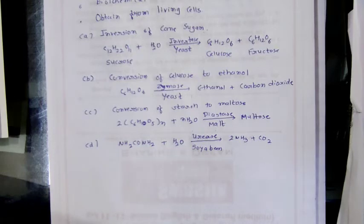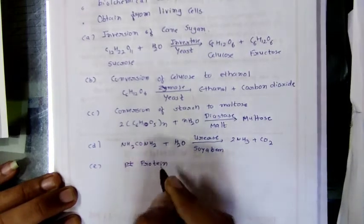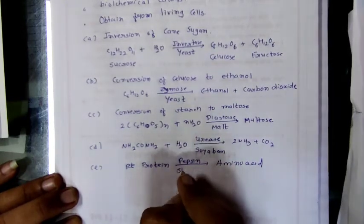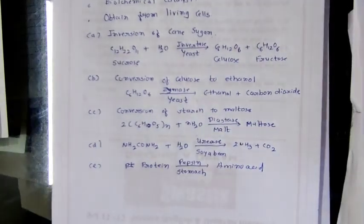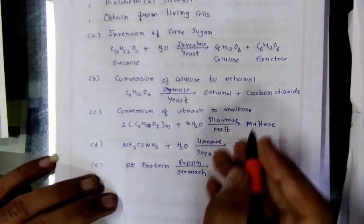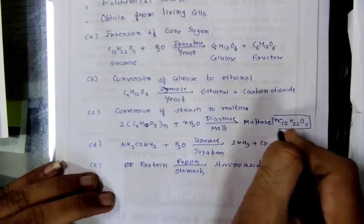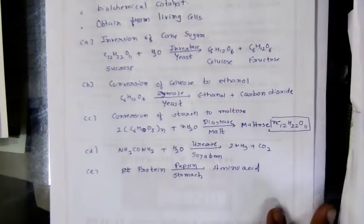In the stomach, the pepsin enzyme converts protein into amino acids. So protein, in the presence of pepsin enzyme (source: stomach), is converted into amino acids. To summarize: urea converts to ammonia via urease; starch yields maltose via diastase; glucose yields ethanol and CO2 via zymase; and maltose (formula C12H22O11)n yields glucose. These are the important examples of enzyme catalysis.